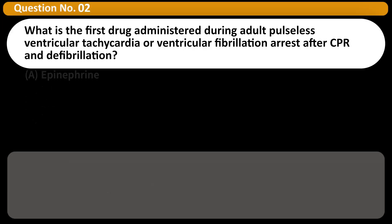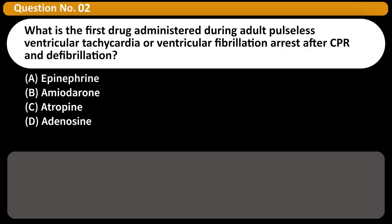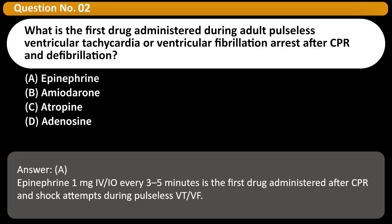What is the first drug administered during adult pulseless ventricular tachycardia or ventricular fibrillation arrest after CPR and defibrillation? A. Epinephrine. B. Amiodarone. C. Atropine. D. Adenosine. Answer: A. Epinephrine 1mg IV/IO every 3-5 minutes is the first drug administered after CPR and shock attempts during pulseless VT/VF.